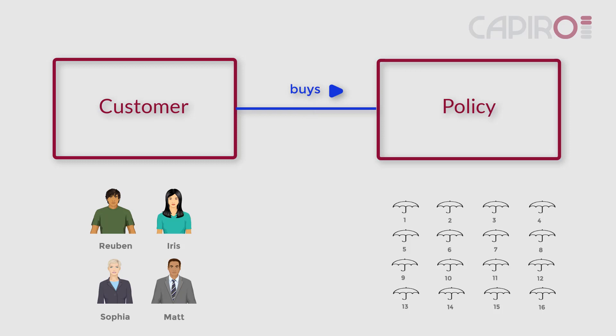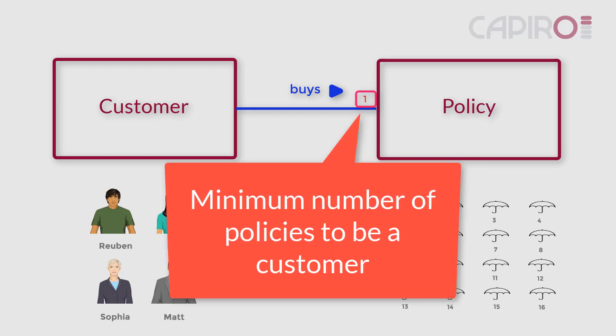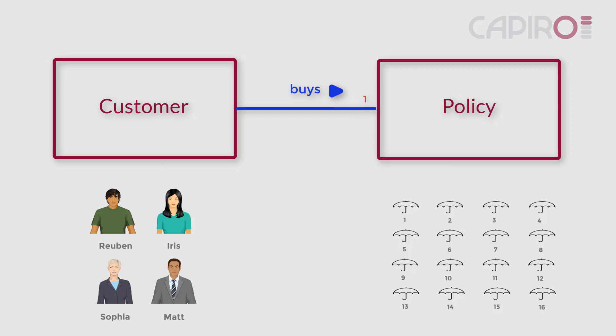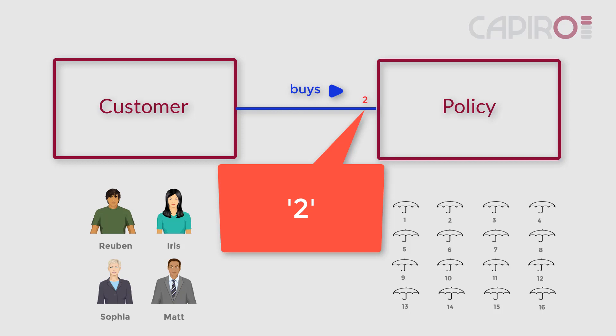Theo now adds that to be a customer, a person must have bought at least one policy. It's a business rule — it's part of the company's definition or concept of a customer. We can show that on the model. The number one shows the minimum number of policies that any one person must buy to be a customer. If the minimum number of policies needed to be a customer is two, you simply change the adornment to a two instead of a one.